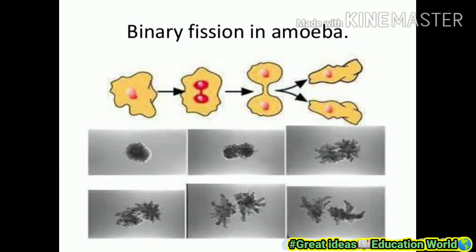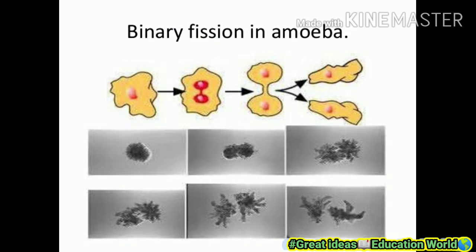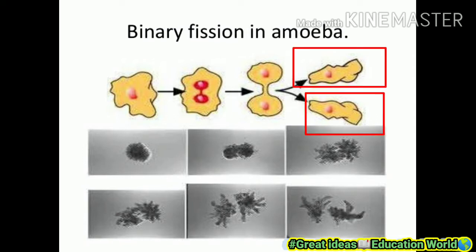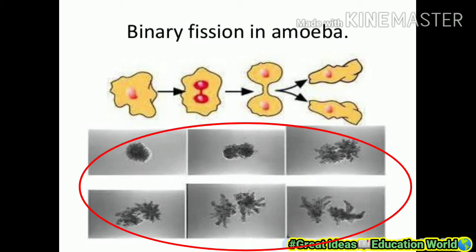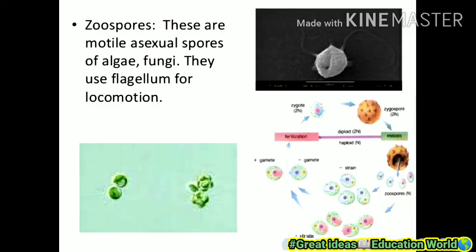Let's see an example of binary fission: amoeba. Here is one amoeba — its nucleus extends and it is converted into two parts. As its nucleus converts into two parts, it divides into two cells and grows into a new organism. Here is a microscopic image shown in this example.